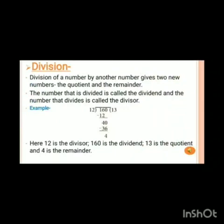Now let's move on to the next operation on numbers: division. Division of a number by another number gives two new numbers, the quotient and the remainder. The number that is divided is called the dividend and the number that divides is called the divisor. As you can see in the example, here 12 is the divisor, 160 is the dividend, 13 is the quotient and 4 is the remainder.